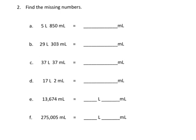In this problem we're being asked to convert this mixed measurement: we've got 5 liters and 850 milliliters, and we're supposed to convert that into just plain old milliliters. So the big thing that students need to know is...